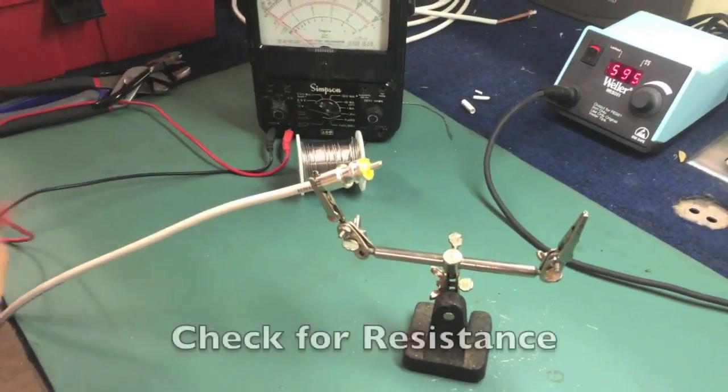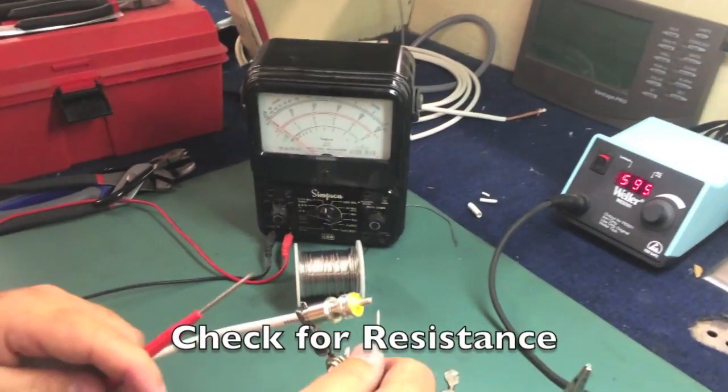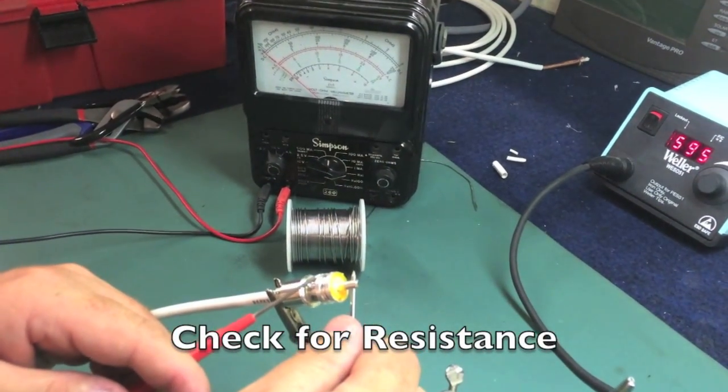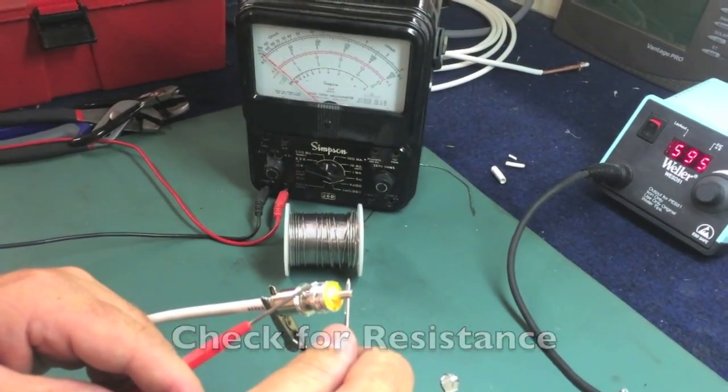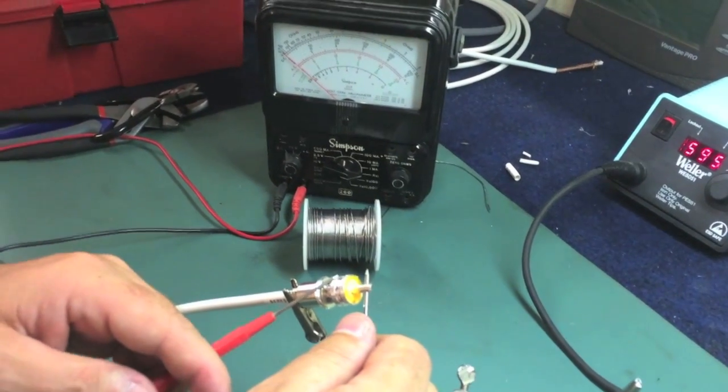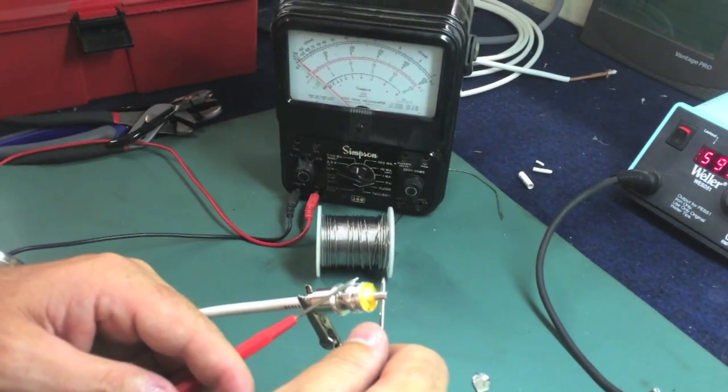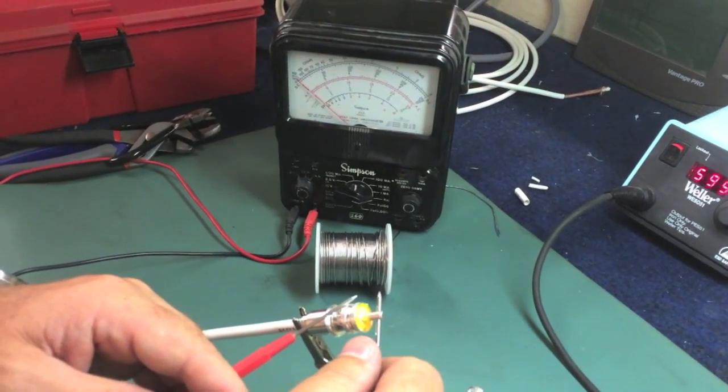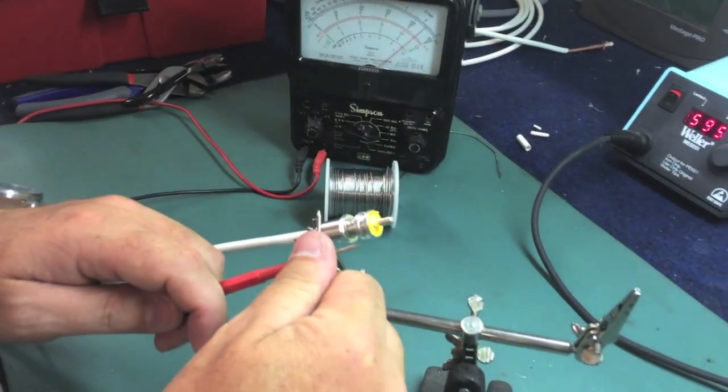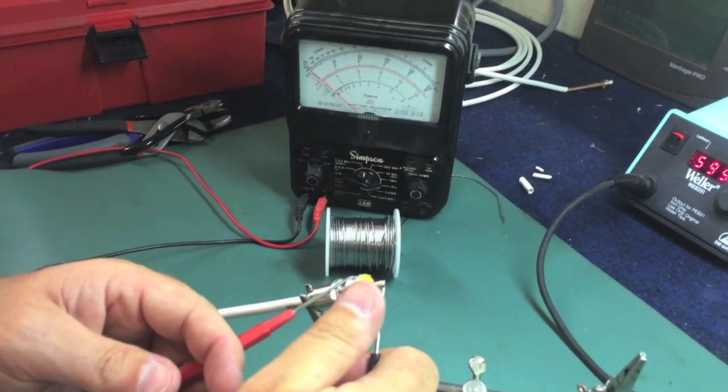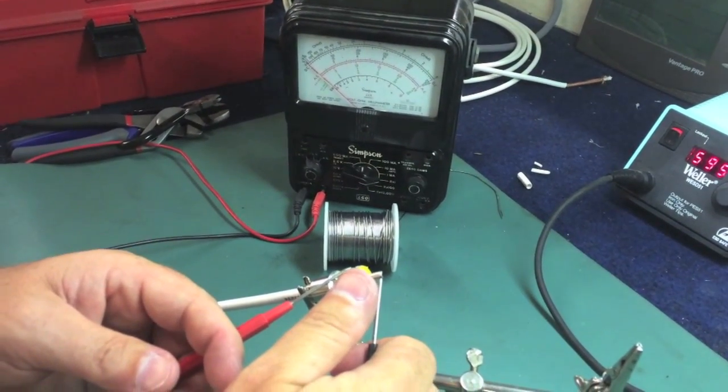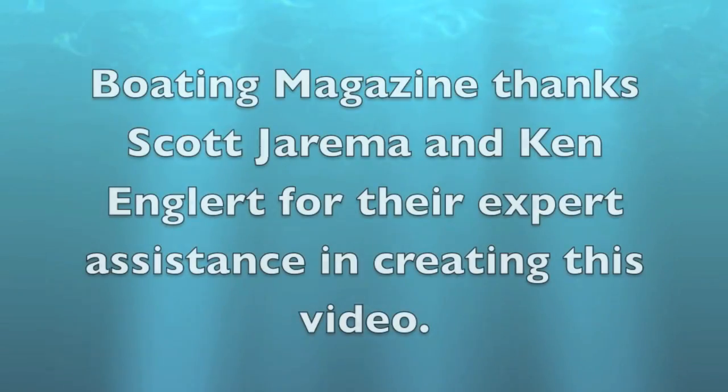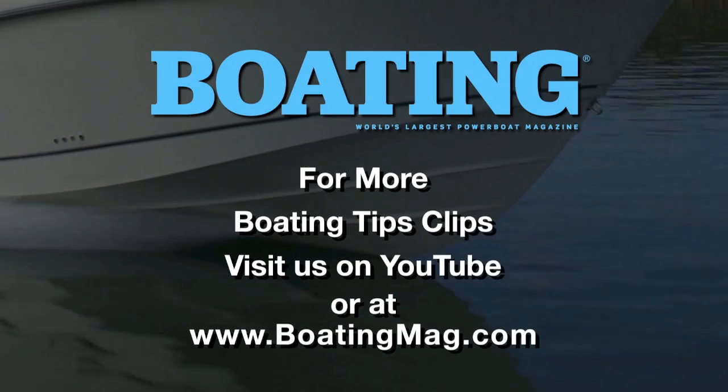We're going to use our classic Simpson 260 meter to make sure we don't have... And we're good. We don't have any... So the needle's indicating no resistance, which means you haven't shorted out your center pin with your shield. And that's a good solder joint. The needle's indicating no resistance is acceptable.